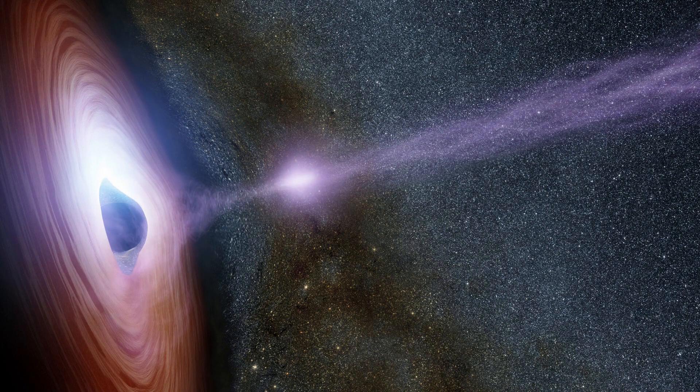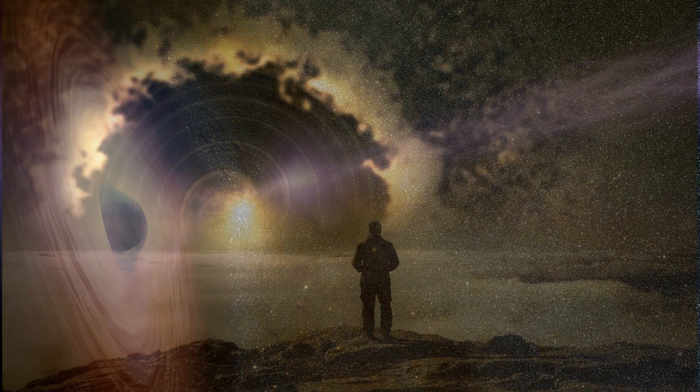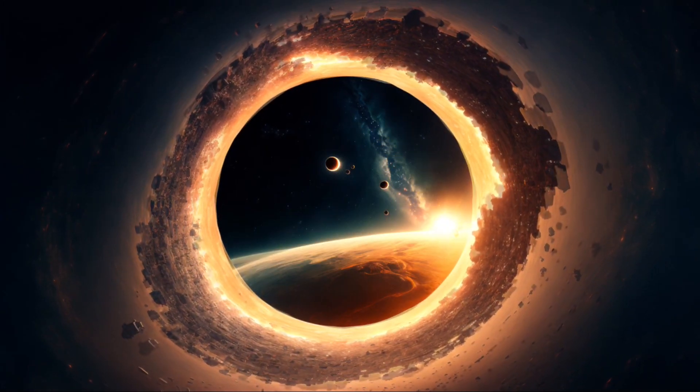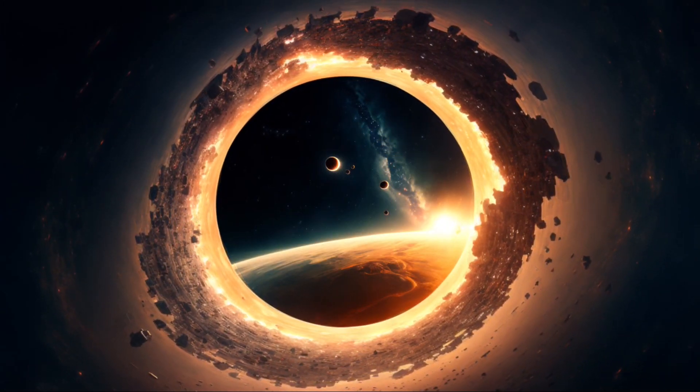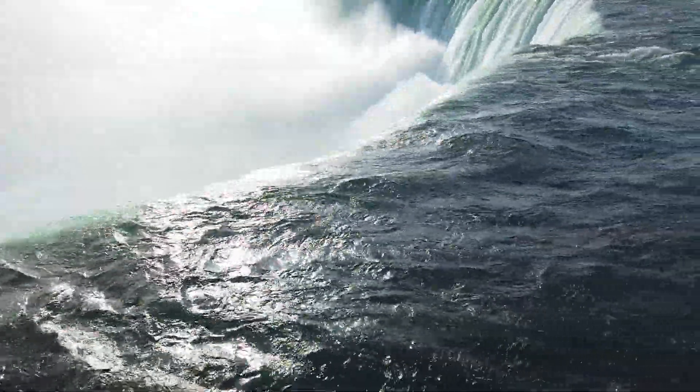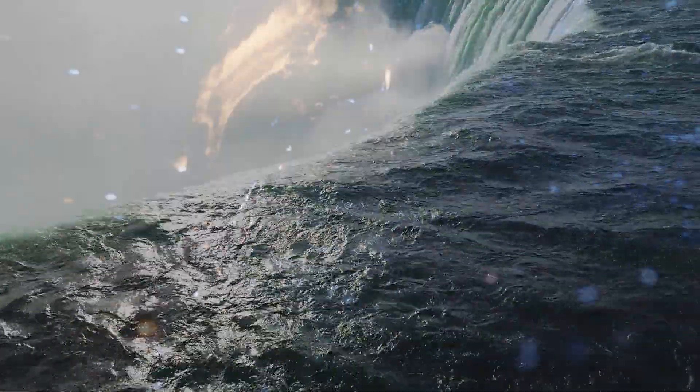Around this singularity, there's a boundary we call the event horizon. This is the point of no return. Once something crosses the event horizon, it's forever lost to the black hole. It's a bit like crossing the edge of a waterfall. Once you're over the edge, there's no swimming against the current.